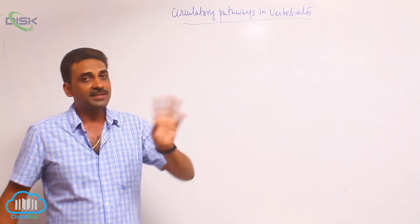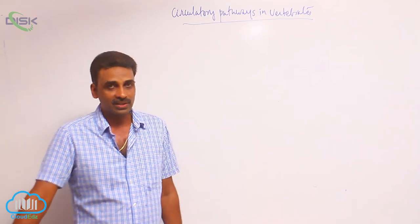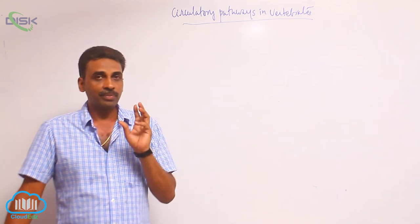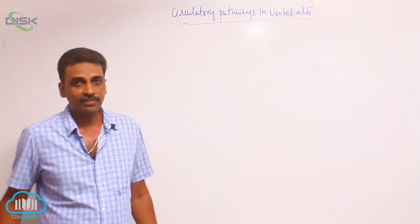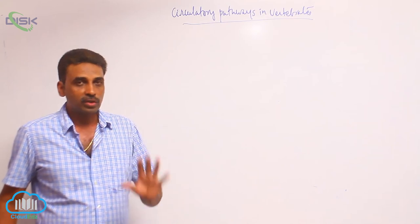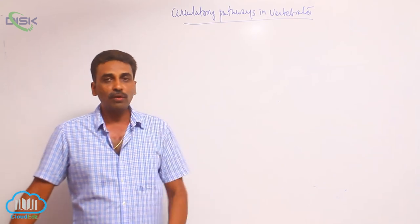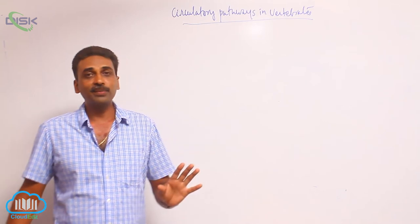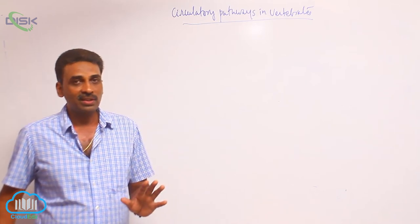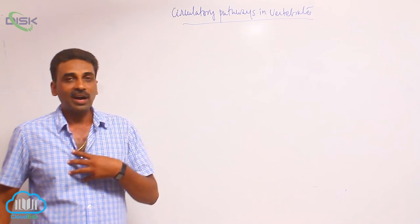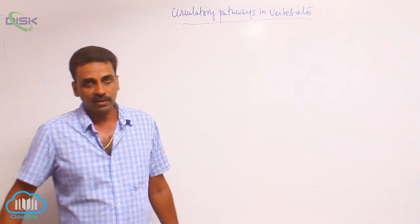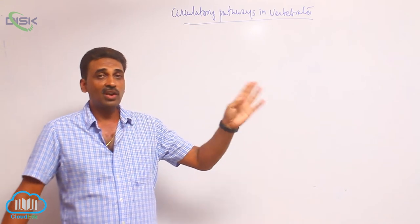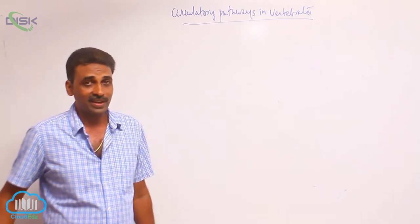If you compare invertebrate hearts and vertebrate hearts, in the case of chordates, there are generally two, three, or four chambered hearts. And when hearts are present in chordates, the heart is generally located on the ventral side, whereas in invertebrates, the heart is generally on the dorsal side.